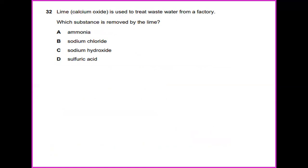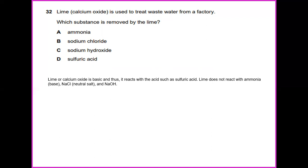Lime or calcium oxide is used to treat wastewater from a factory. Which substance is removed by the lime? Lime and calcium oxide is a base and thus it reacts with acids such as sulfuric acid. Lime does not react with ammonia, base, neutral salt, and an alkali. So the answer for this will be sulfuric acid.